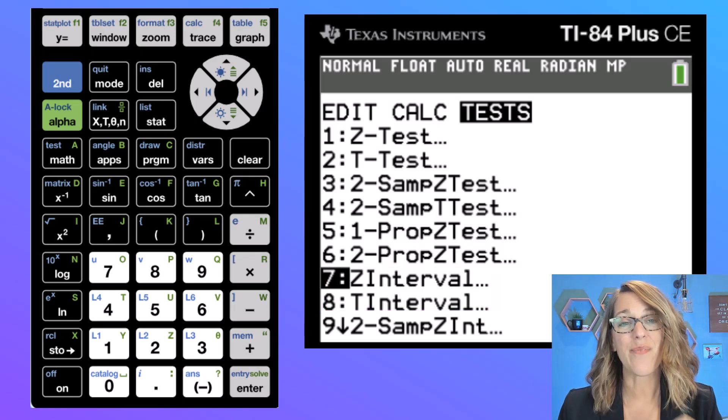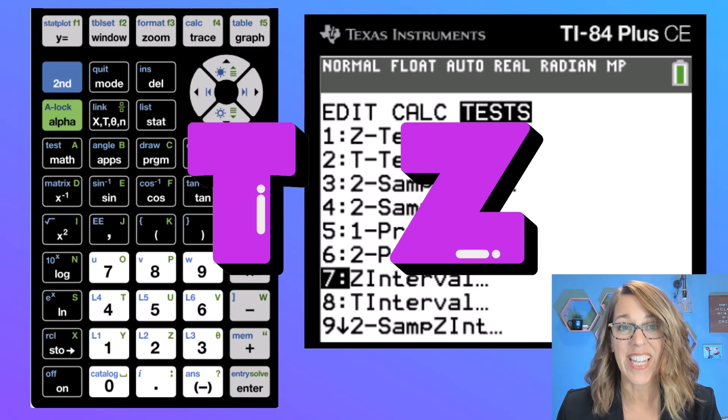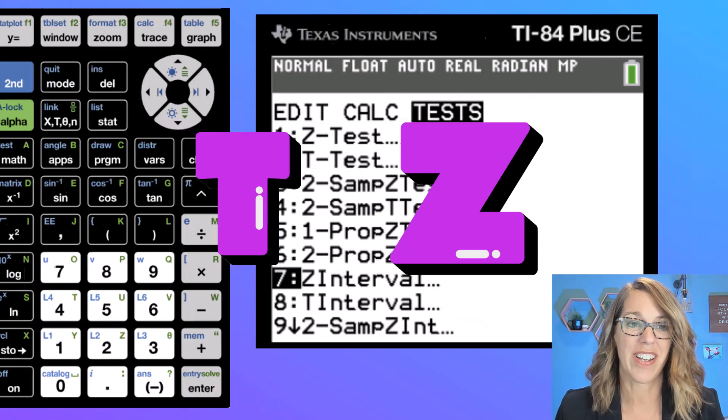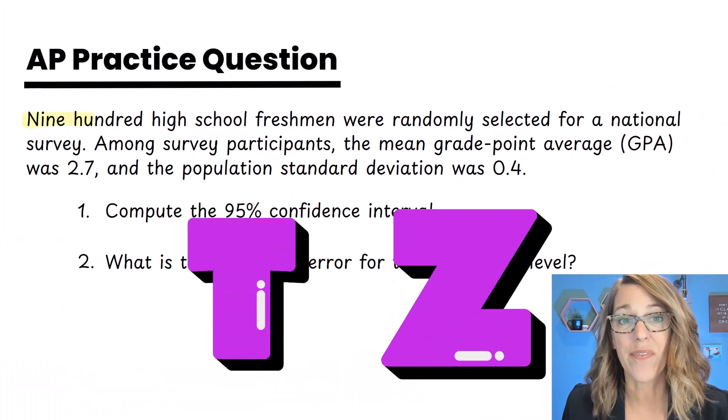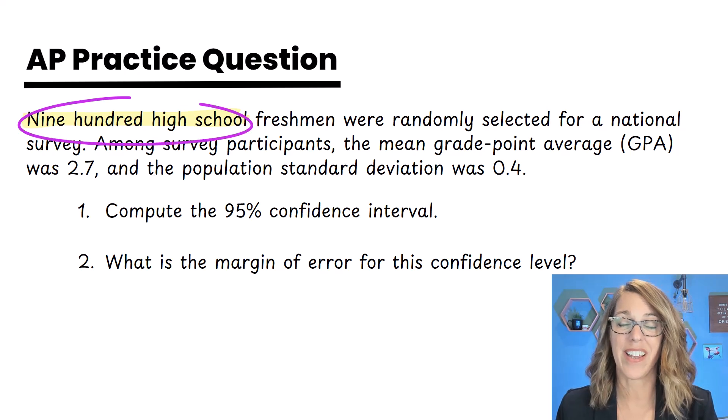So I need to decide which of these two we need. Let's go back to that question. As I look at this question more carefully, I see that N equals 900. This is a really large sample size.